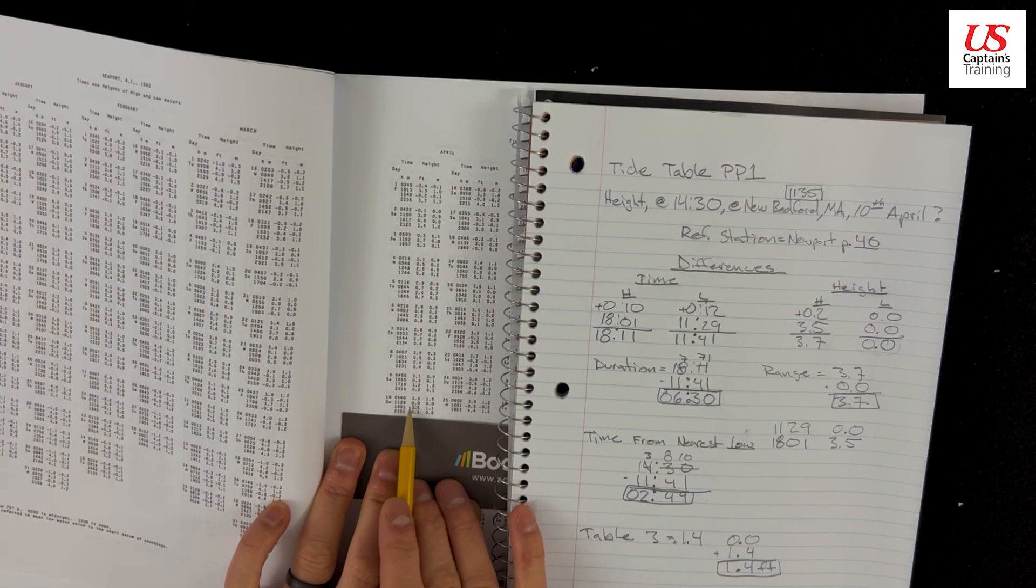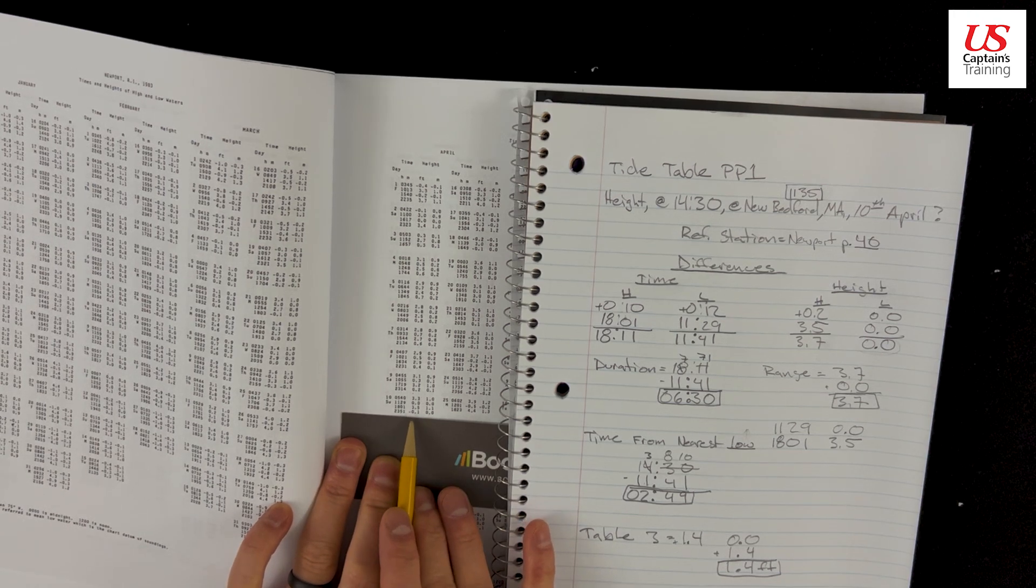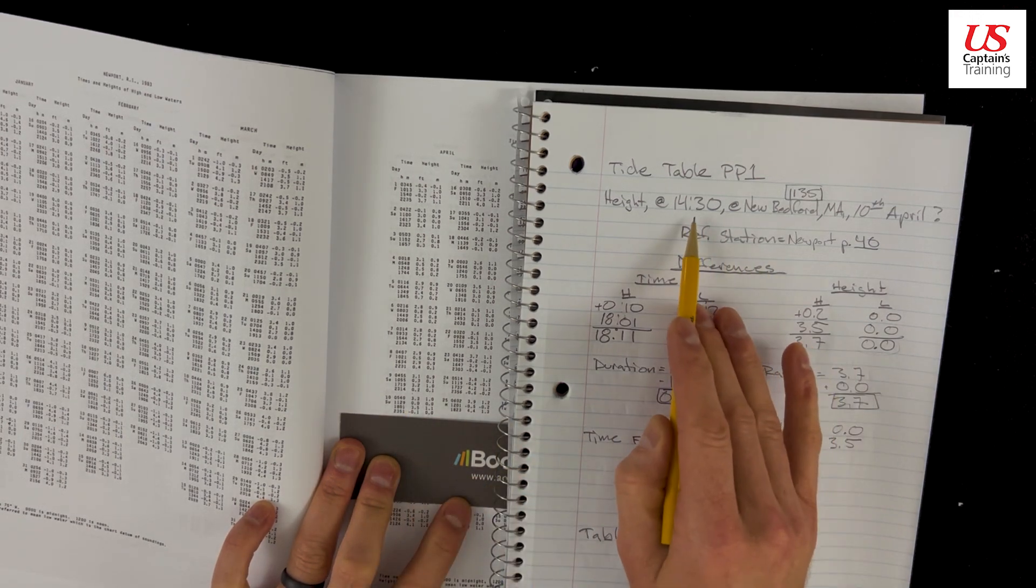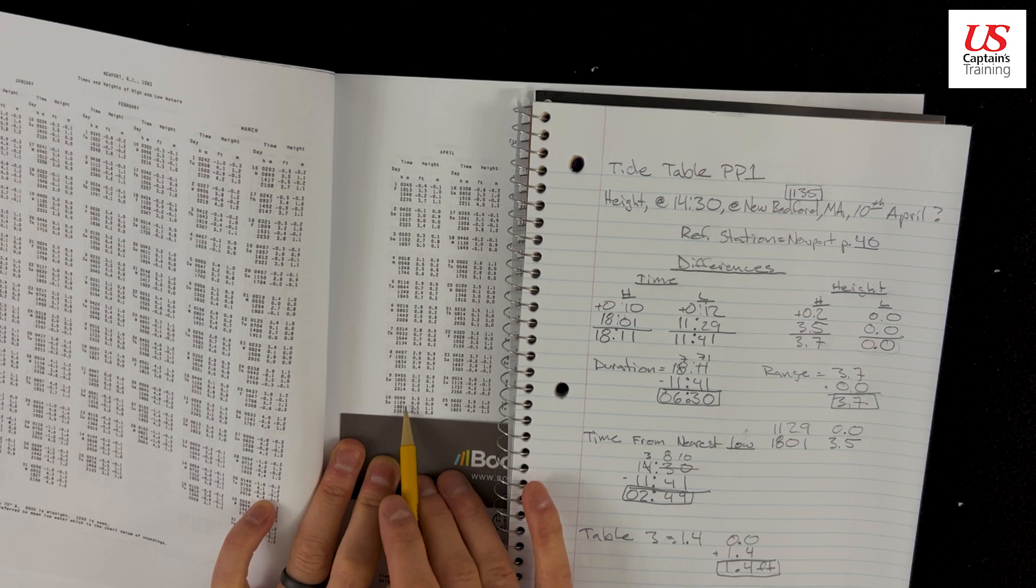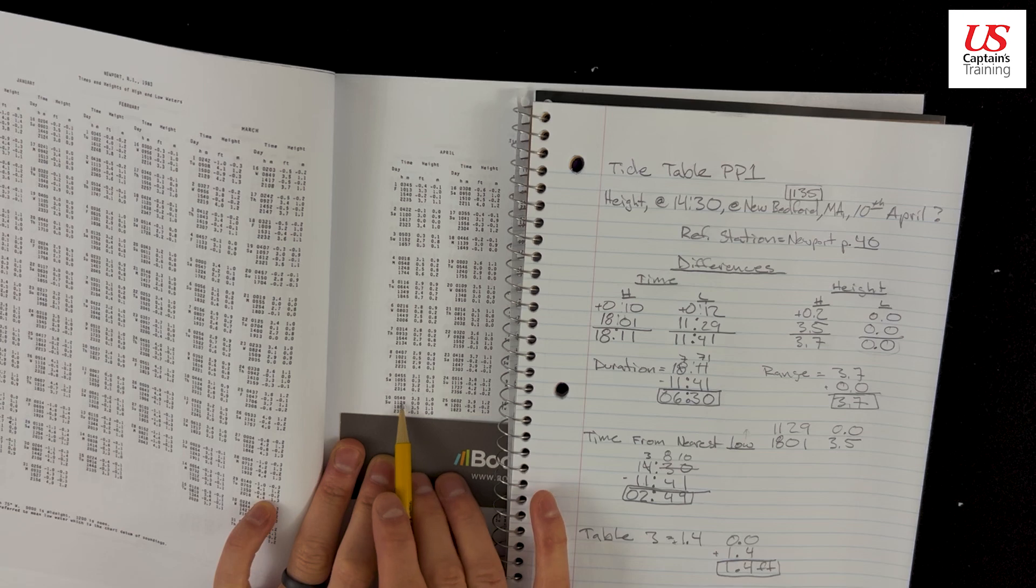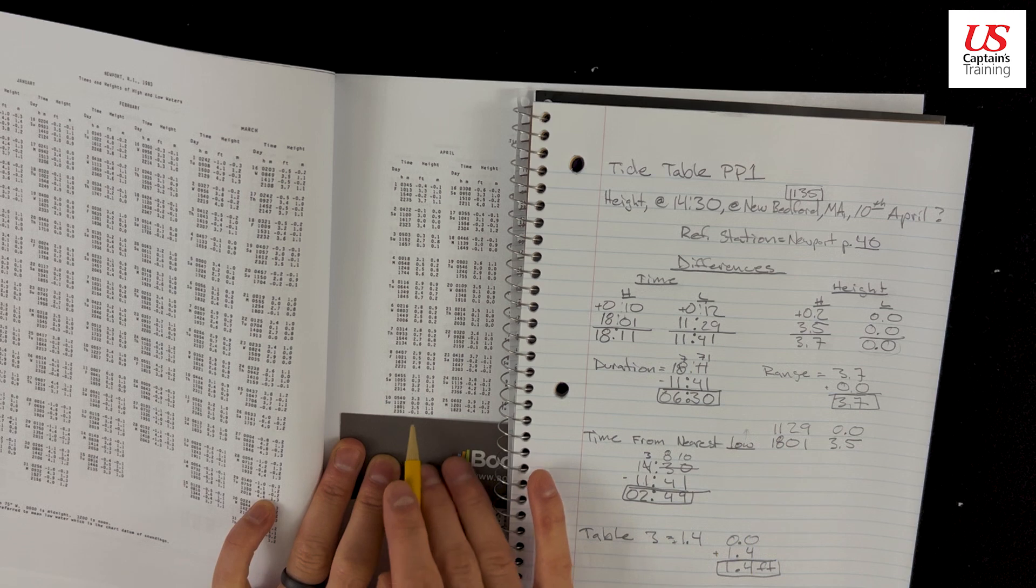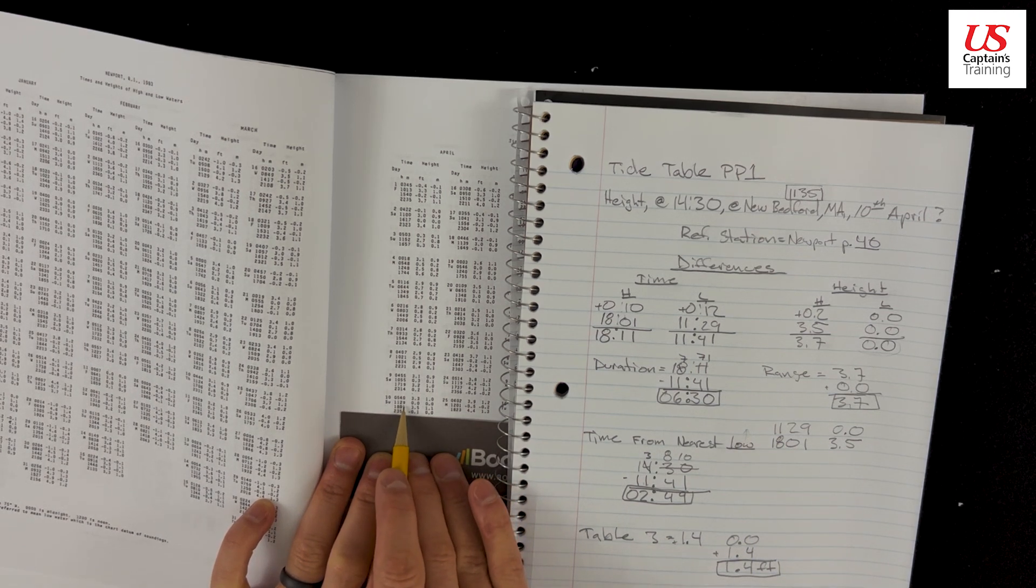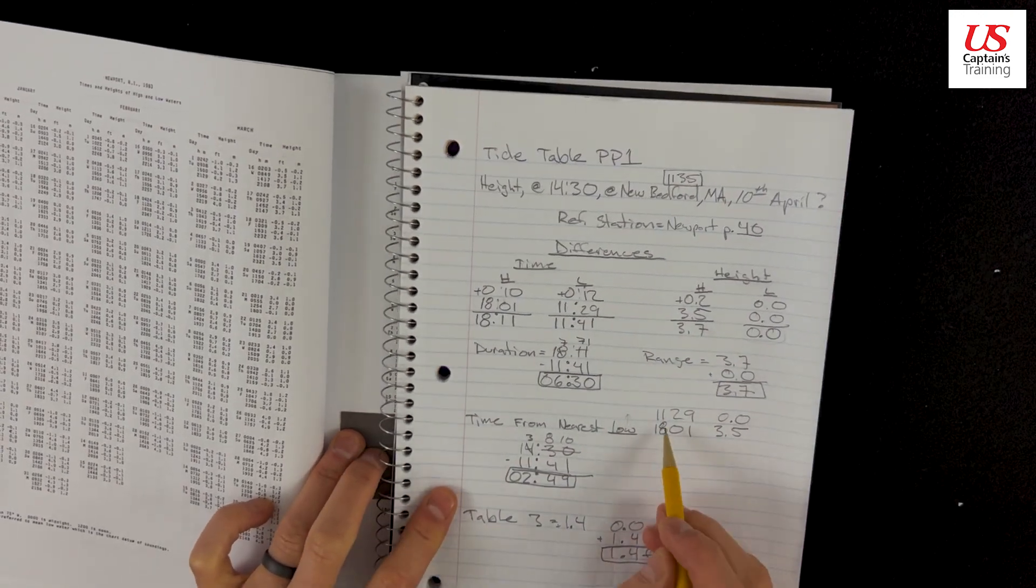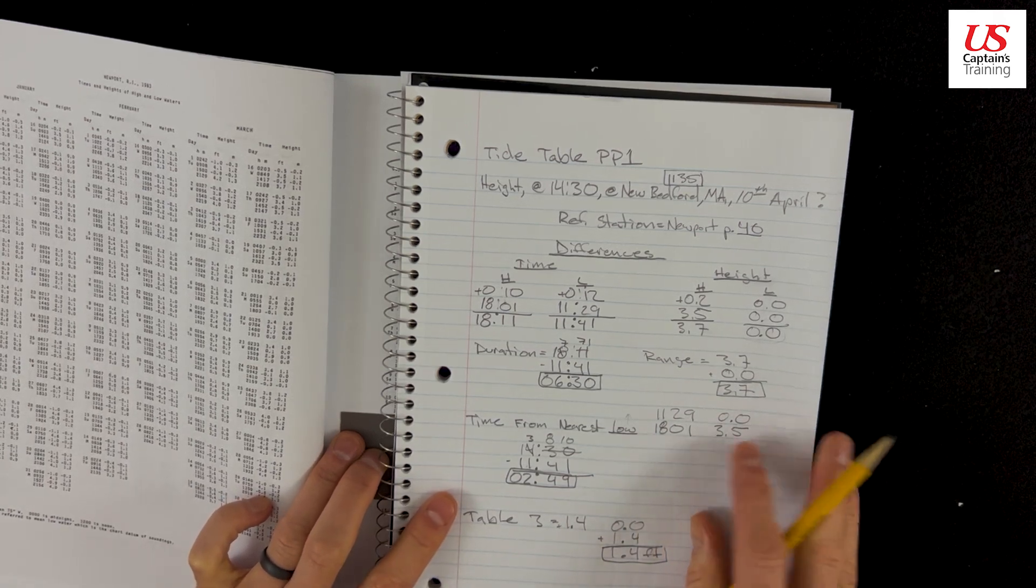Okay, so now we're on April 10th and we're given all these times and heights: 5:40, 3.3, that's a high tide; 11:29, 0.0, that's a low tide; 18:01, 3.5, that's a high tide; 23:51, minus 0.1, that's a low tide. What we need to figure out is where we're at, 14:30. Where does this lie? Well, right off the bat it looks like it lies between 11:29 and 18:01. And if we apply our time corrections to those, our time corrections only 10 minutes and 12 minutes, so yeah, we lie between 11:29, which is a low tide, and 18:01, which is a high tide. And I record these here: 11:29, 0.0; 18:01, 3.5. This just makes our life a lot easier. Now we have all these numbers, we can start crunching them.